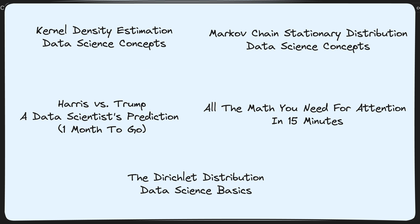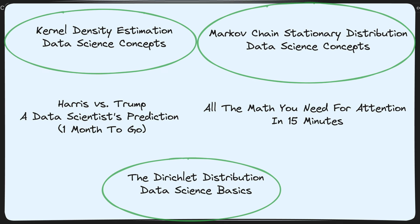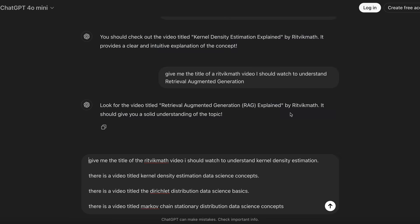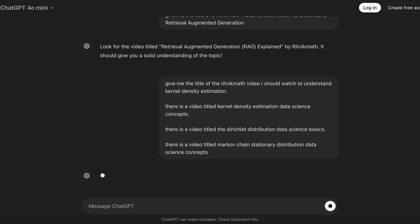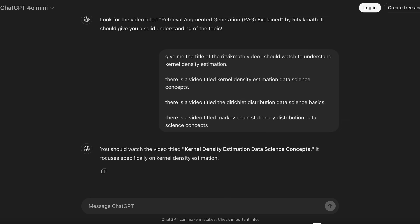What might this look like? We might start by taking all of the video titles that exist on this channel and see which ones are decent matches to the user's query. Going back to our query about kernel density estimation, here are five titles we might be considering. It seems like three of them have at least something to do with topics in KDE, such as distributions and probability densities. We append these three titles to the user's original prompt, pass that new updated prompt through ChatGPT, and we get the exact right answer — you should watch the video titled Kernel Density Estimation, Data Science Concept, which is the exact title of the video on the channel itself.